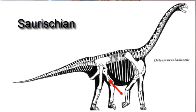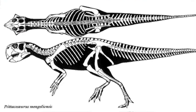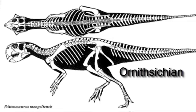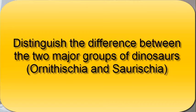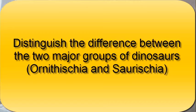Finally, let us look at this last dinosaur. Is it an Ornithischian or a Saurishian? It is an Ornithischian. Good job! You should now be able to distinguish the difference between the two major groups of dinosaurs, the Ornithischians and Saurishians.